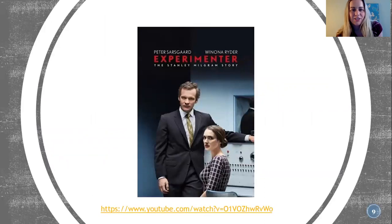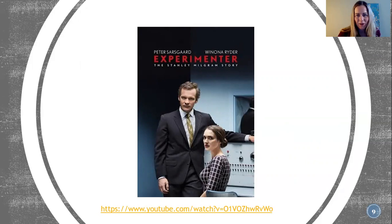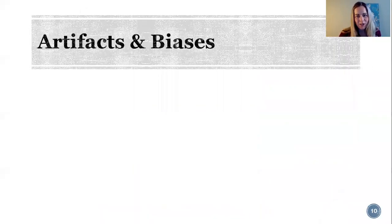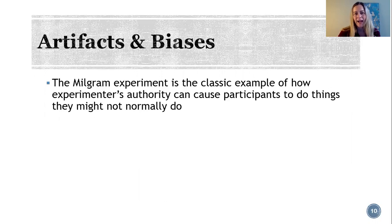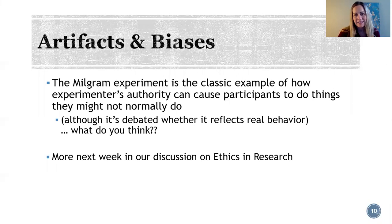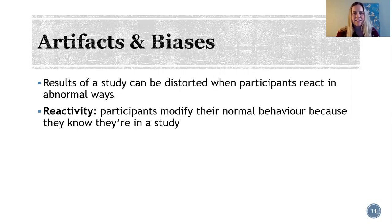For the next example, pause this video and go to YouTube and search 'Experimenter trailer.' Watch the trailer for this movie about research done by Stanley Milgram. The Milgram experiment has been discussed in lots of different ways — we'll talk about it more next week in the context of research ethics. Today we're talking about it as a classic example of how the experimenter's authority can cause people to do things they might not normally do, and how a study's results might be distorted if participants act in abnormal ways.